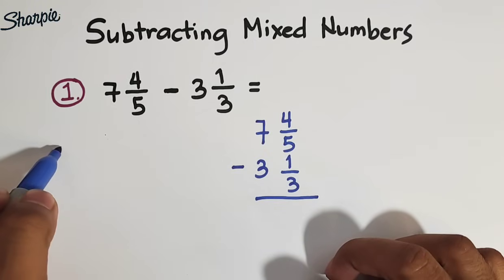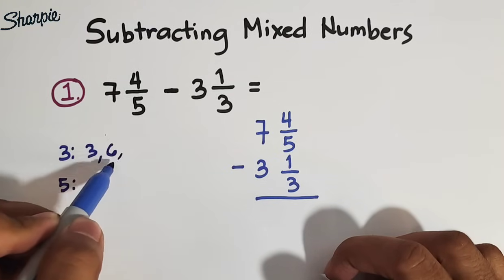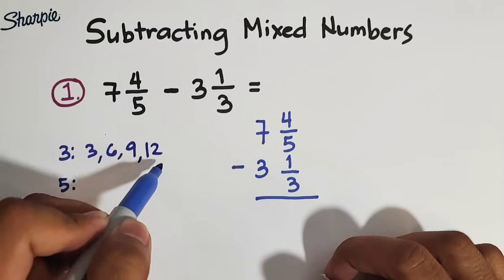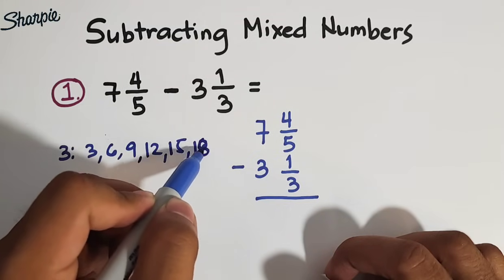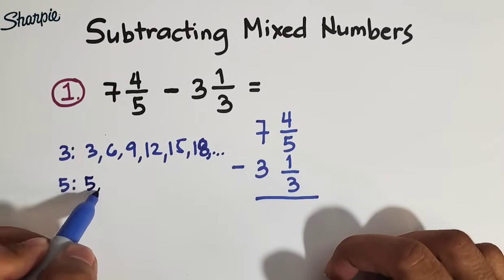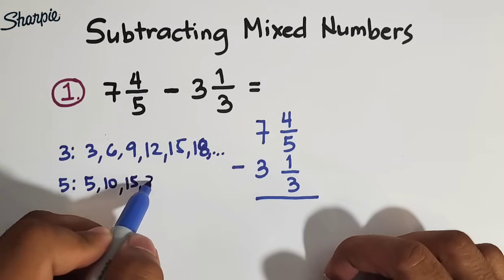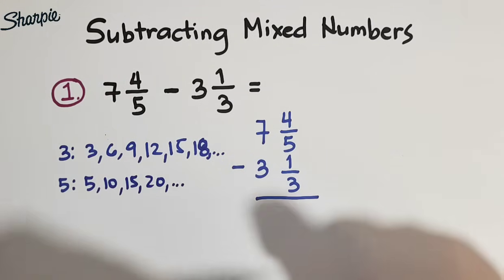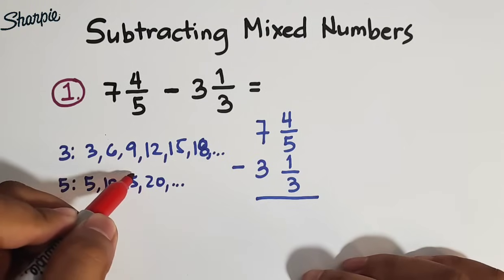So we need to list down the multiples of 5 and 3. The multiples of 3 are 3, 6, 9, 12, 15, 18, and so on. While for 5, we have 5, 10, 15, 20, and so on. And as you can see, we already have the least common multiples of 5 and 3, and that is 15.